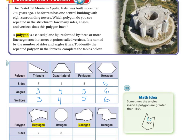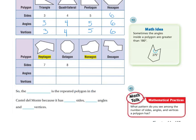Starting to see a little pattern here. Let's move on to the heptagon. Sides: one, two, three, four, five, six, seven — seven sides. Angles: one, two, three, four, five, six, seven. And vertices: one, two, three, four, five, six, seven — seven of each.